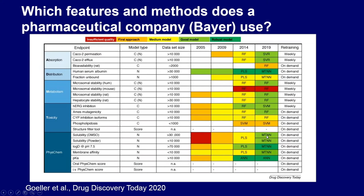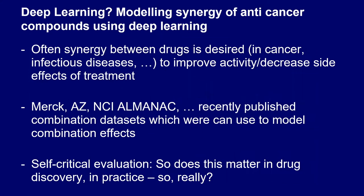Multi-task models have quite a big impact, particularly when physical-chemical properties are correlated — larger compounds are less soluble and more lipophilic. In some areas requiring frequent retraining, random forest models are still used in practice. Some models need to be retrained weekly or even more often.